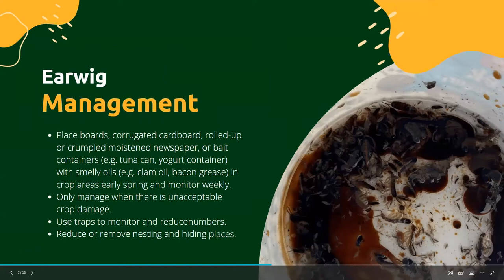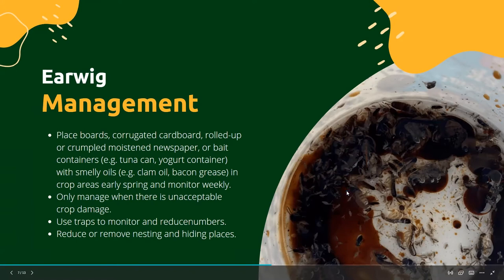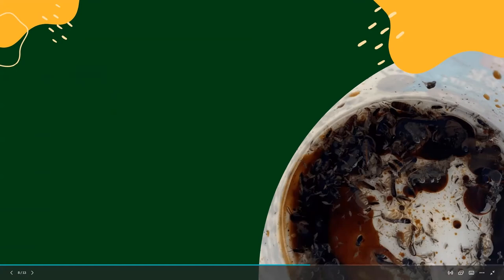Since earwigs can be both beneficial and detrimental to crops, we only want to consider treatment when we find a lot of damage. When managing earwigs, one of the best things you can do is make bait traps. Place boards, corrugated cardboard, or rolled-up newspaper near the site — they'll crawl under there, and in the morning you can capture and destroy them. Here's a homemade trap my wife and I made using an empty yogurt container filled with canola oil and soy sauce. A couple of days later there were tons of earwigs in it — a great option for home gardeners. You can also reduce nesting and hiding places by removing debris.